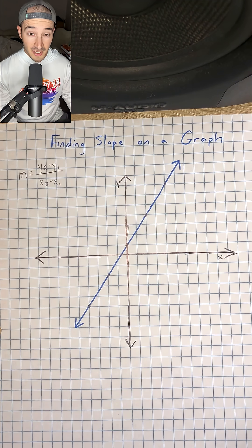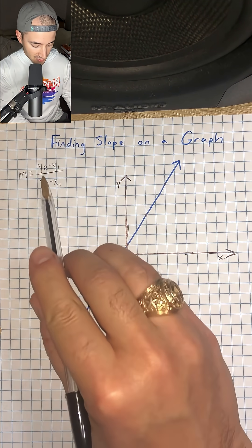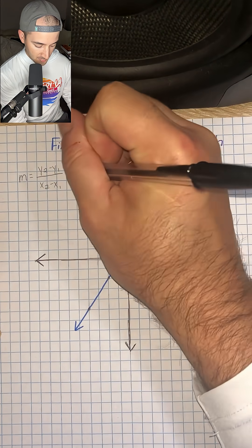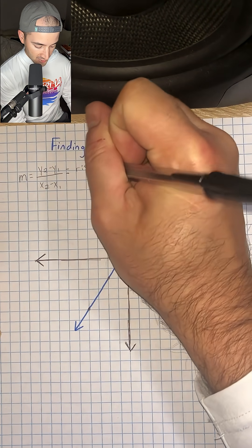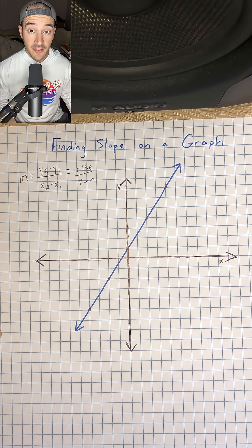So really if you think about it, the y values are going up and down, the x values are going left to right, so that formula is really the same thing as saying rise over run. You've probably heard that in class.